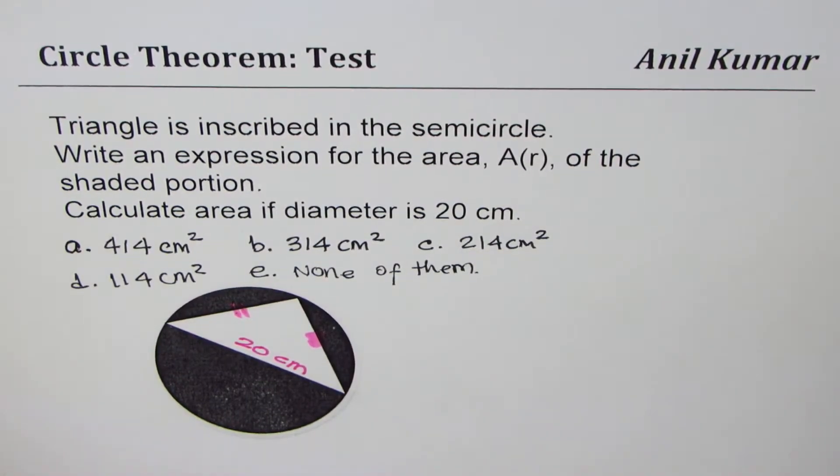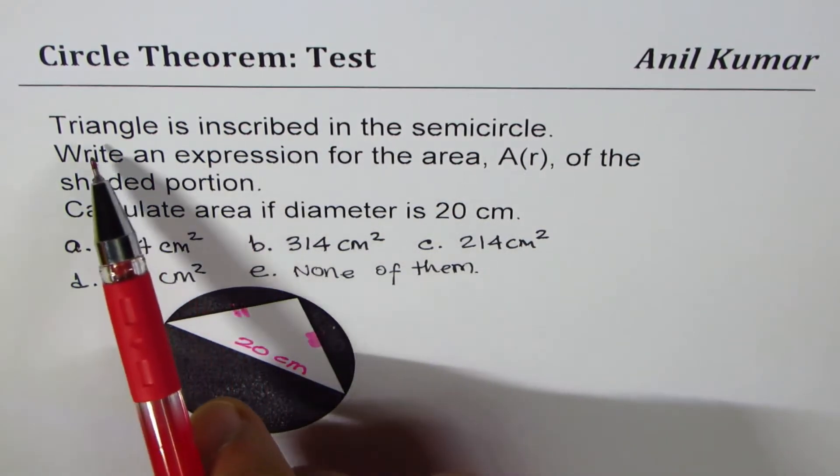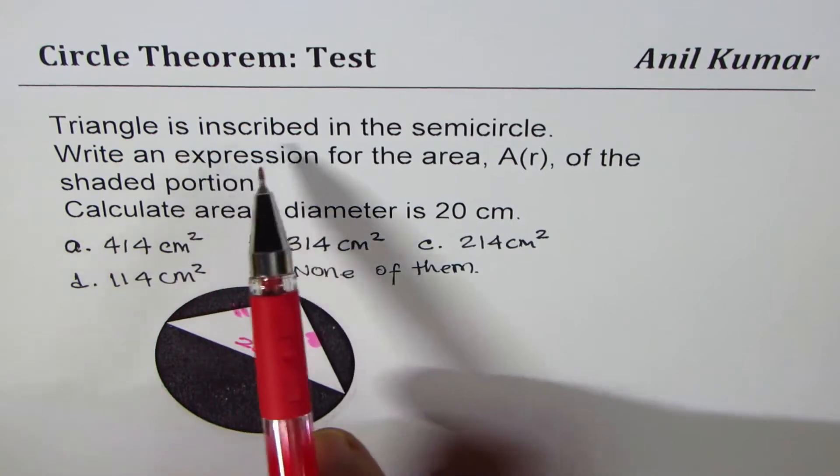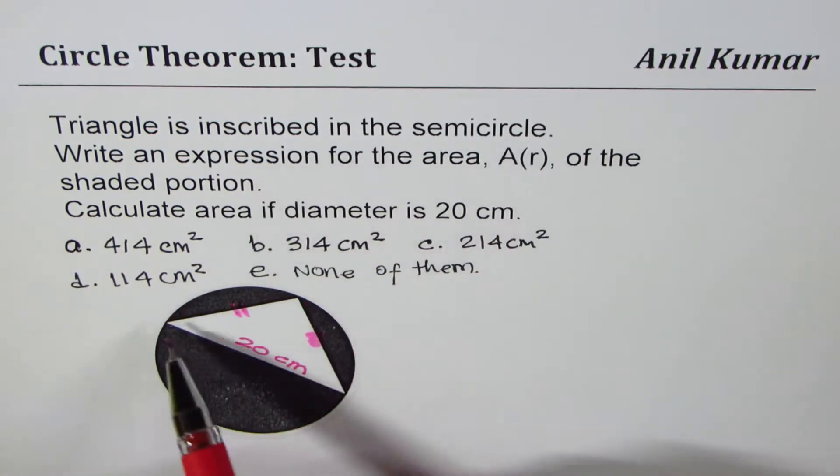I'm Anil Kumar sharing with you a multiple choice question on circle theorem. We are given a triangle which is inscribed in a semicircle. So this triangle is inscribed in the semicircle.